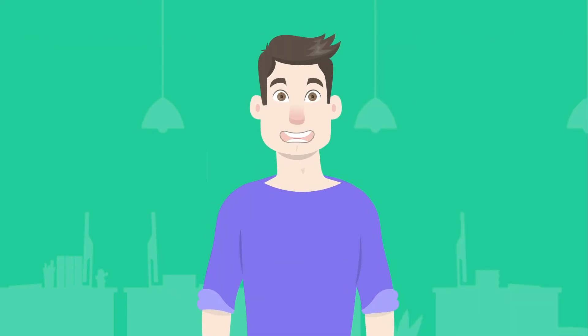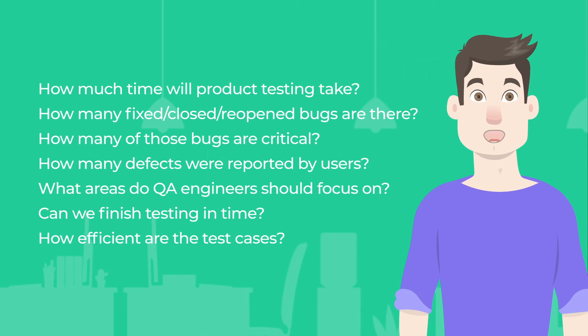QA metrics provide answers to some important questions: How much time will product testing take? How many fixed, closed, and reopened bugs are there? How many of those bugs are critical? How many defects were reported by users? What areas should QA engineers focus on? Can we finish testing in time? How efficient are the test cases? And more.